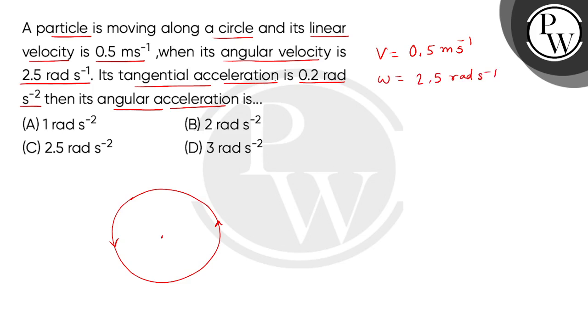Its tangential acceleration, which we can indicate as A, is given as 0.2 radian per second square. We have to find its angular acceleration, which means alpha.